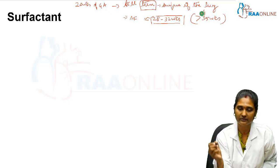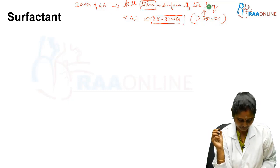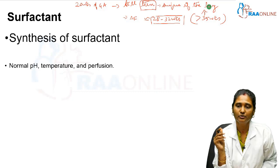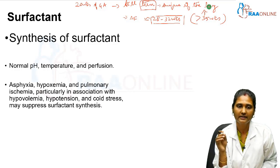Coming to the synthesis of surfactant, for surfactant to synthesize, there should be normal pH, normal temperature, and perfusion. Any factors that reduce pH like metabolic acidosis, or hypothermia, or hypoxemia will decrease surfactant production. Like asphyxia, hypoxemia, pulmonary ischemia, particularly in association with hypovolemia or hypotension, or cold stress environment suppress surfactant synthesis. Normally for surfactant to synthesize properly, it should have ideal normal pH, temperature, and perfusion.